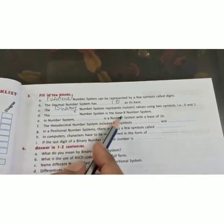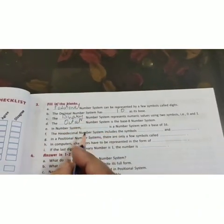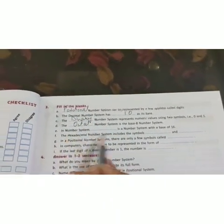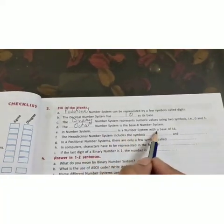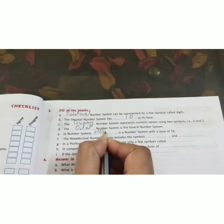The octal number system is a base 8 number system. In number system, hexadecimal is a number system with a base of 16. Hexadecimal number system is basically having base of 16.